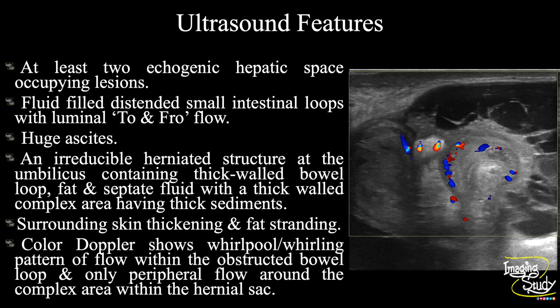Fluid-filled distended small intestinal loops with luminal to-and-fro flow were seen, suggesting small intestinal obstruction. Huge ascites was seen. Regarding the cause of intestinal obstruction, an irreducible herniated structure was noted at the umbilical region containing a thick-walled strangulated bowel loop with thickened fat and septate fluid, along with a complex thick-walled area having thick sediments indicating abscess formation within the herniated sac. Surrounding fat stranding and skin thickening were seen. Color Doppler shows a whirlpool or whirling pattern of flow within the obstructed bowel loop suggesting strangulation. The complex mass showed only peripheral flow with no internal flow, confirming abscess.